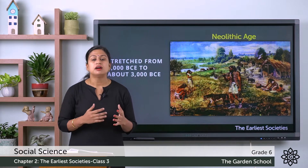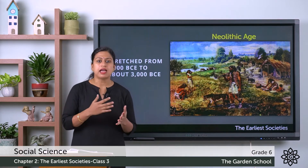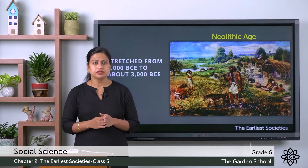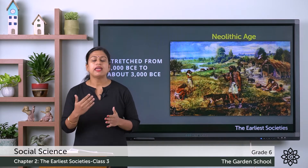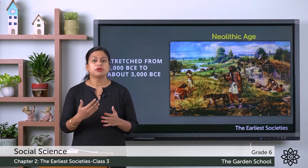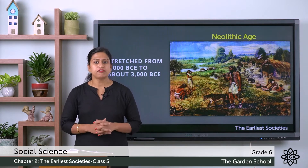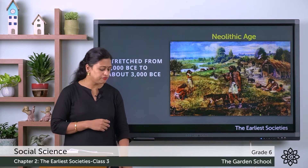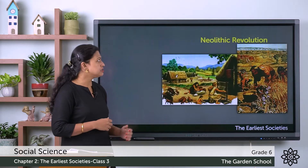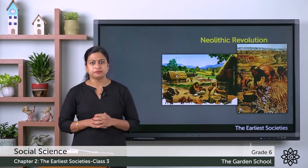Earlier they were hunter-gatherers, but now they became farmers — they started producing their own crops. This phase of human life is known as the Neolithic Revolution.